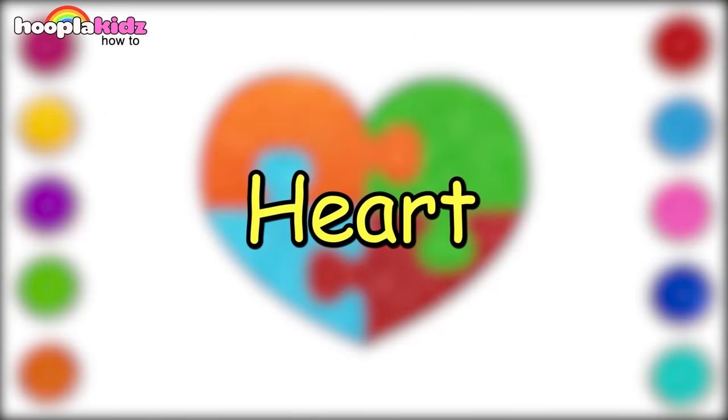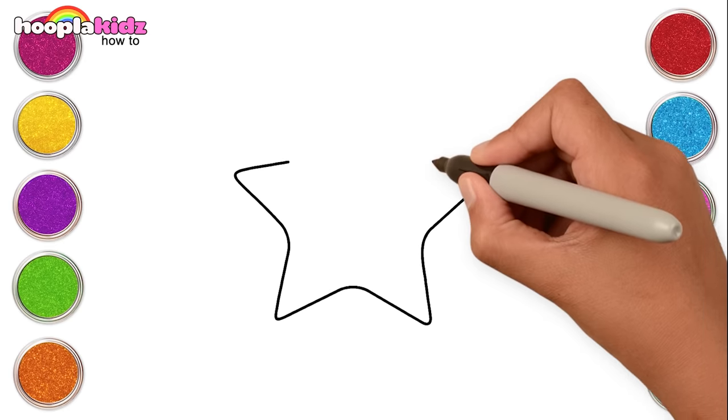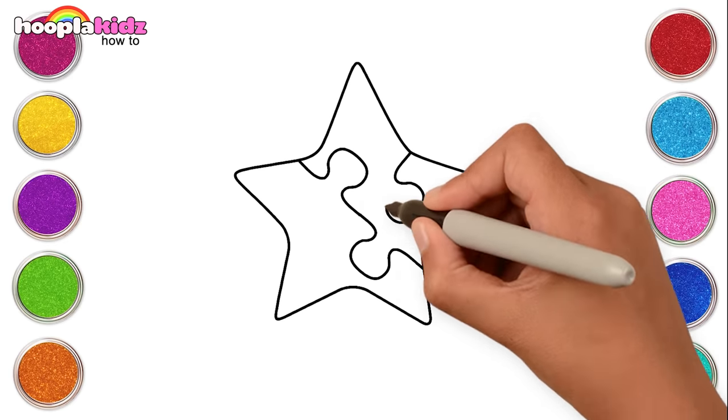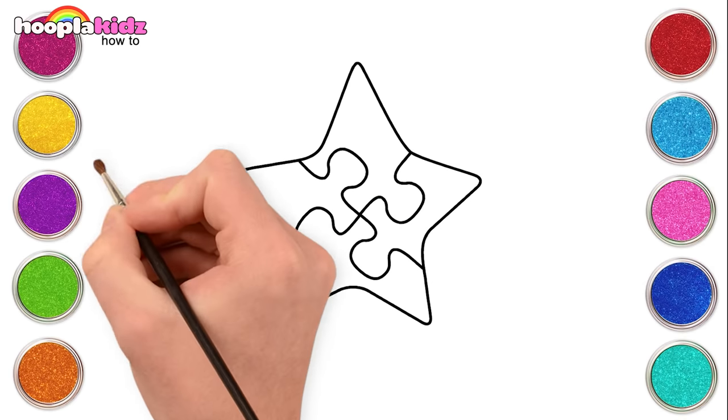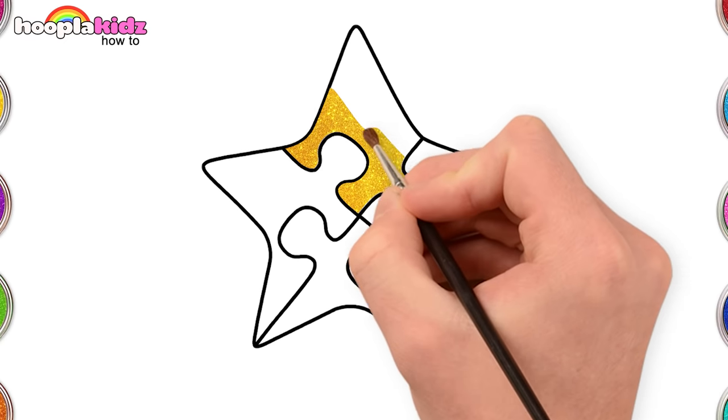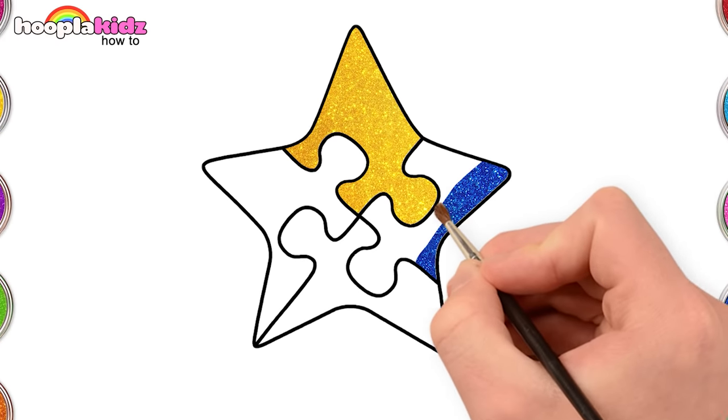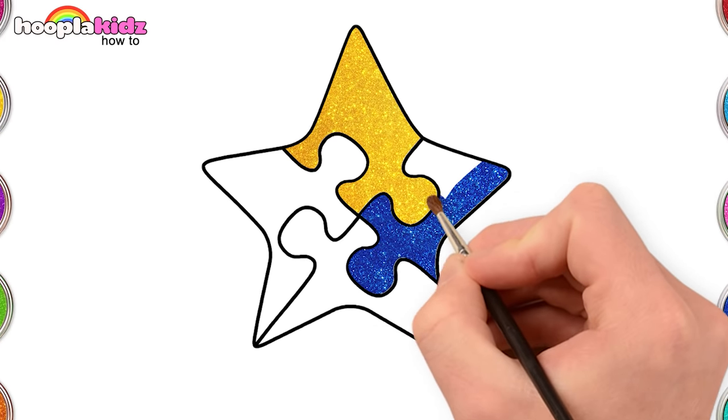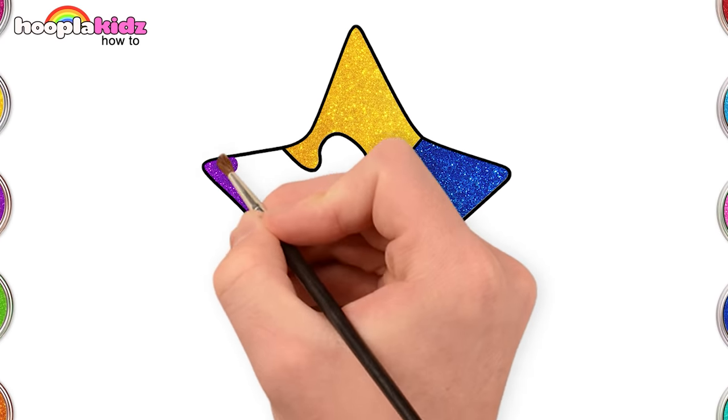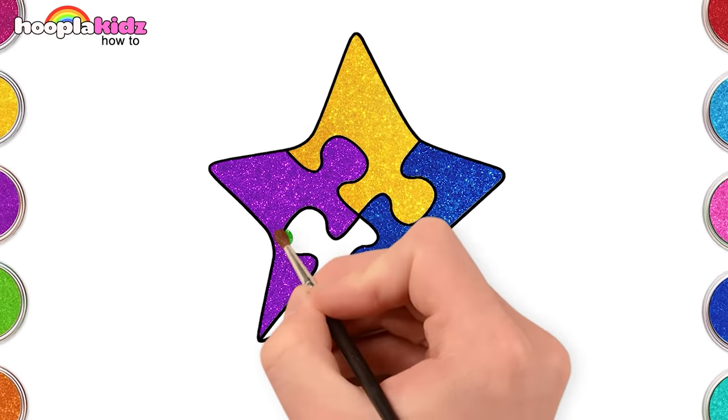Last one to go, and that is a star. Let's make a star and colour with yellow, dark blue, purple, and green.